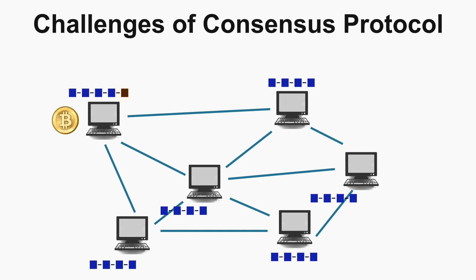Coming back to our distributed network — when a miner adds a new block, it is added to the chain and they receive the mining reward as well as the transaction fee included in that block. So there is a financial incentive for miners for mining and for playing fair. If a miner puts in a lot of work and adds a block, but their block gets rejected due to a malicious transaction, they won't get any reward. So miners need to play fair to get a reward for their huge work — this is also one reason why it is difficult to hack the blockchain.